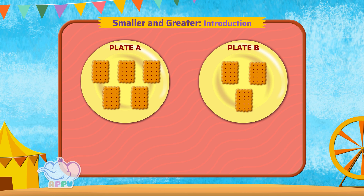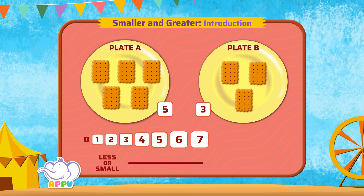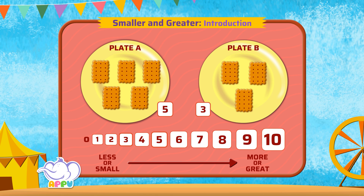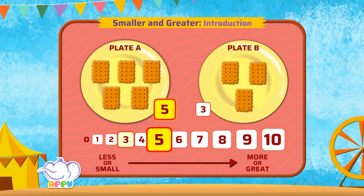Plate A has 1, 2, 3, 4, 5 biscuits. And Plate B has 1, 2, 3 biscuits. If we see the order of numbers, 5 comes after 3. So 5 is greater than 3. So you select Plate A with 5 biscuits.